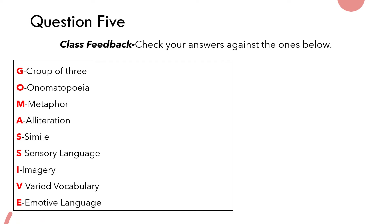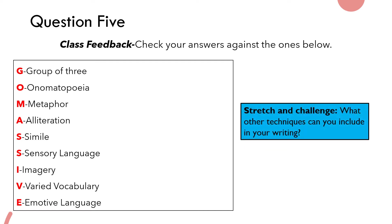E is Emotive Language — using language that evokes an emotional response from the reader. Nothing too harsh or dramatic, just something that creates a physical connection with the characters in your writing. The GO MASSIVE techniques are a really helpful baseline, especially for anyone aiming for a four or a five, but there are other techniques to include as well.